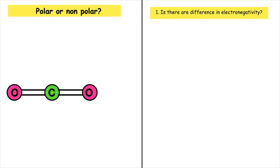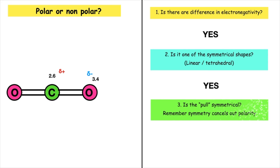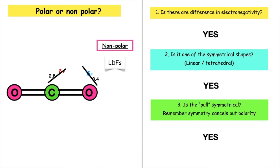Is this example polar or non-polar? Firstly, is there a difference in electronegativity? Yes — carbon is 2.6 and oxygen is 3.4. Is it one of our symmetrical shapes? Yes, it is linear. Is the pull symmetrical — are the atoms on either side of the carbon atom the same? Yes, so symmetry cancels out polarity, and therefore this molecule is non-polar and only has London dispersal forces.